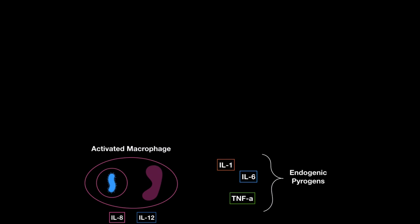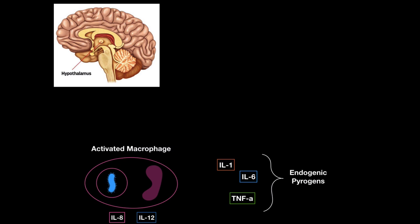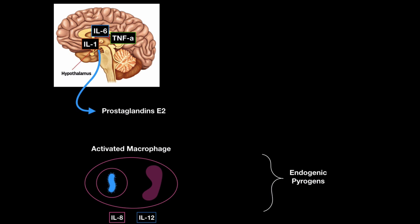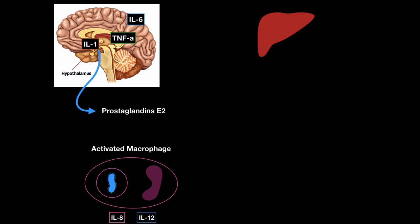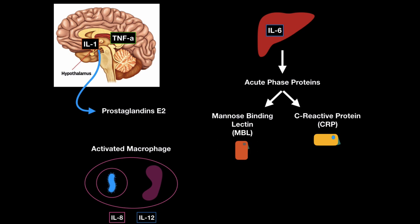All three — IL-1, IL-6, and TNF-alpha — are also endogenic pyrogens, meaning they promote fever. They travel to the hypothalamus, which acts like a thermostat regulating body temperature, and cause it to release prostaglandin E2. This triggers peripheral vasoconstriction to reduce heat loss through the skin, making the person feel cold while being very warm inside — that is the fever response. Additionally, interleukin-6 triggers the liver to release acute phase proteins like mannose-binding lectin and C-reactive protein. Macrophages play a crucial role in the systemic response to microorganisms.